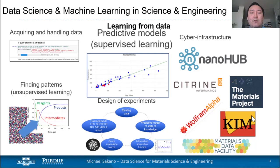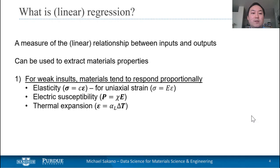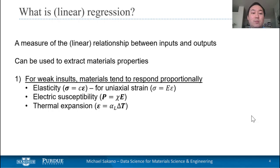Let's get started on linear regression and predictive models. What is linear regression? In general, regression is a measure of the relationship between inputs and outputs, or stimuli and response. It's useful because we can use it to extract materials properties. In general, for weak stimuli, materials tend to respond proportionally, in this case in a linear fashion. Shown in the bullets below are three examples of linear relationships between two materials properties.